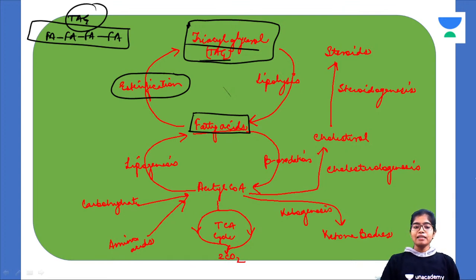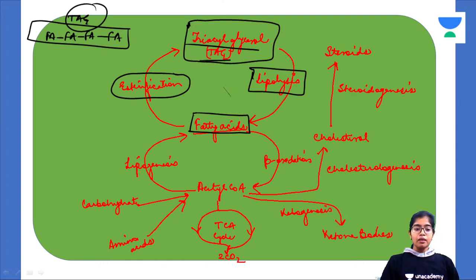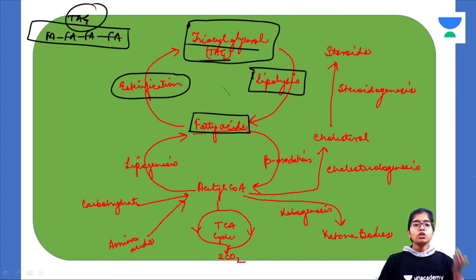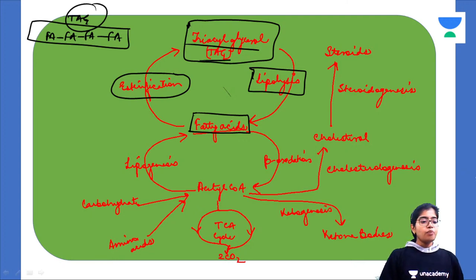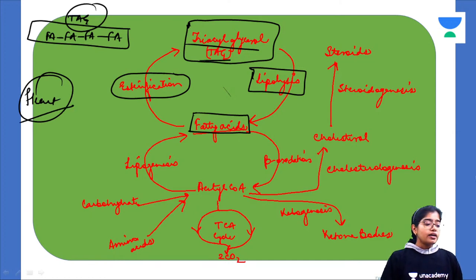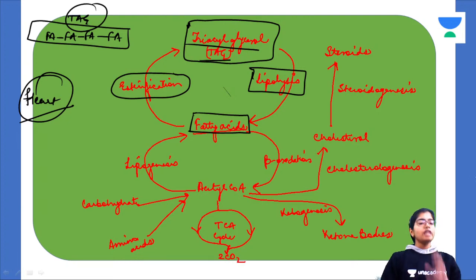TAG is the storage form of fatty acids. When this triacylglycerol molecule breaks down through lipolysis, a catabolic process, it forms free fatty acids. These fatty acids will undergo further metabolism to generate energy — ATP. The most important tissue that utilizes fatty acids for energy is the heart, the cardiac muscle, because it requires a constant supply of energy and fatty acids generate a lot of it.